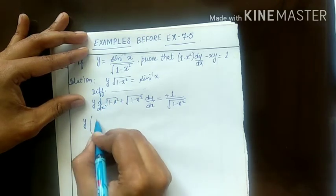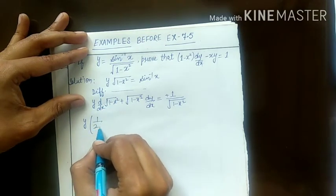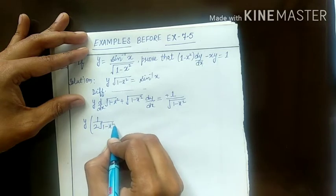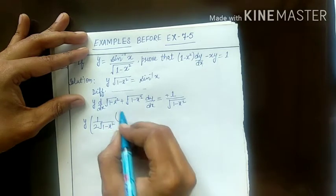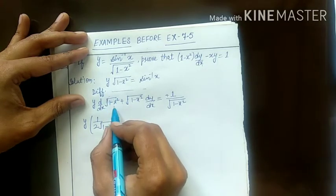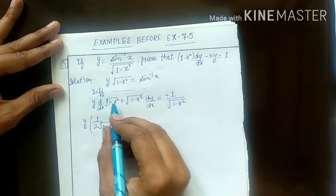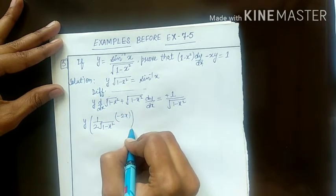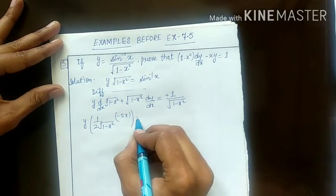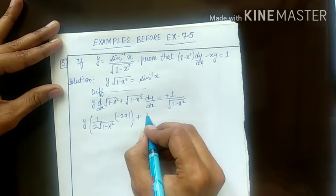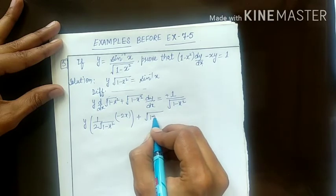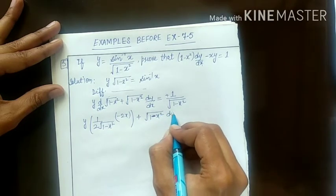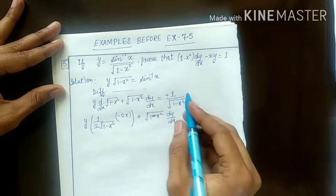Now y as it is — derivative of under root of (1 minus x square). That is 1 upon 2 under root (1 minus x square) into further derivative of 1 minus x square, that is 0 minus 2x. So this is minus 2x, plus 1 minus x square into dy by dx.